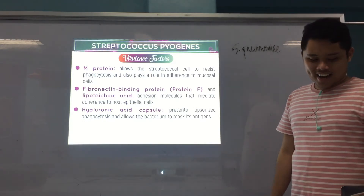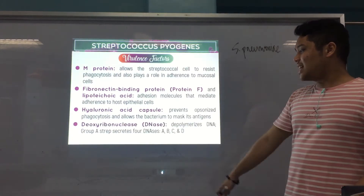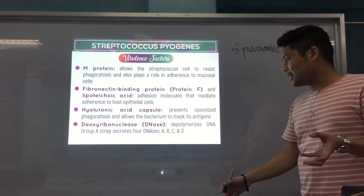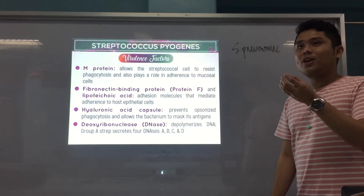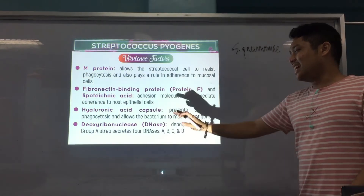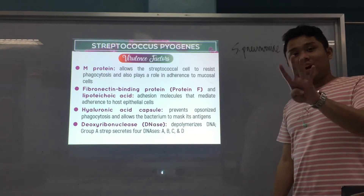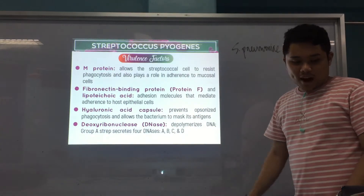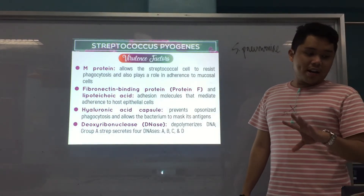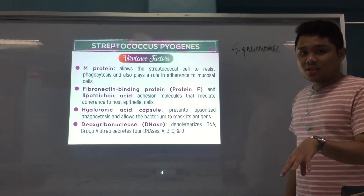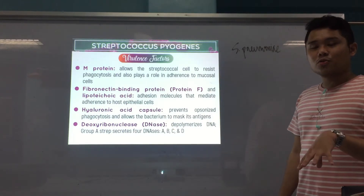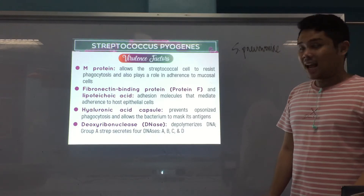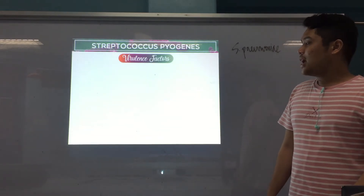DNases — by the name itself — depolymerize DNA. Strep pyogenes secretes four DNases: A, B, C, and D. These virulence factors are ones against which the body creates antibodies, and these antibodies are what we test serologically.